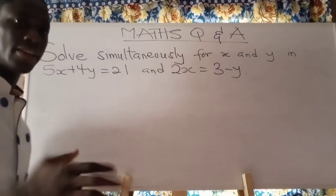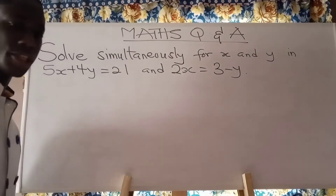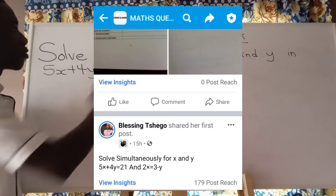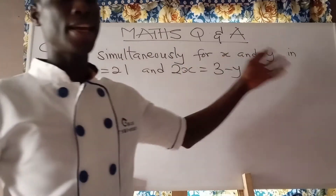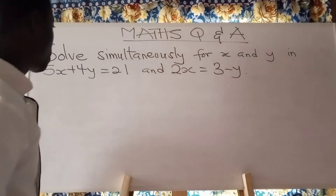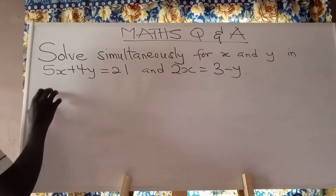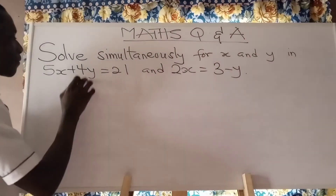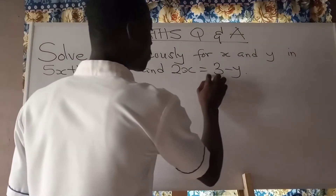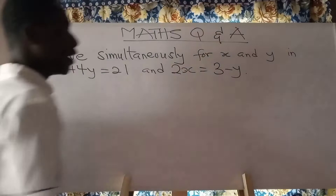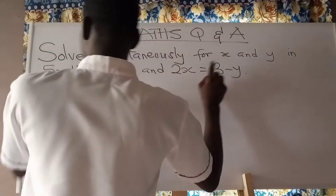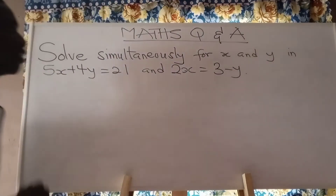Welcome back. Still taking random questions from our Facebook page. This one is from Blessing Shego, and he wants to figure out the values for x and y in this equation. That is a simultaneous equation question. We have the equations as 5x plus 4y equal to 21, and then 2x equal to 3 minus y. We want to find the values of x and y.